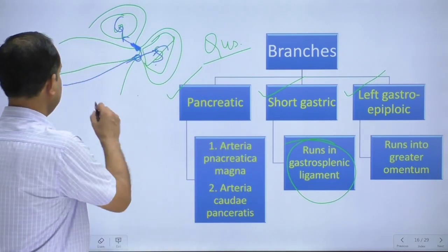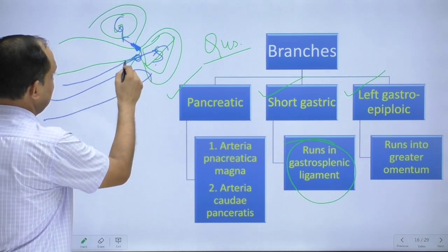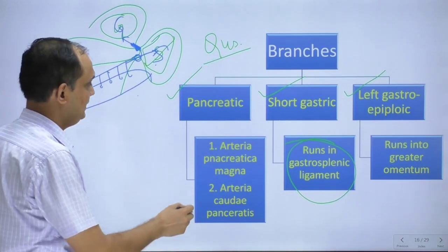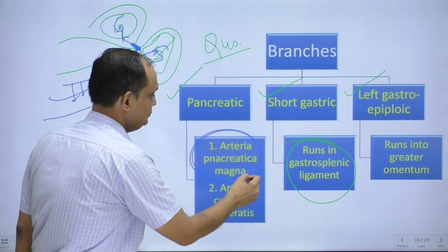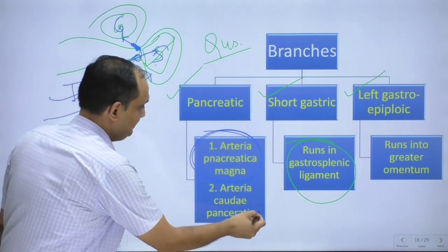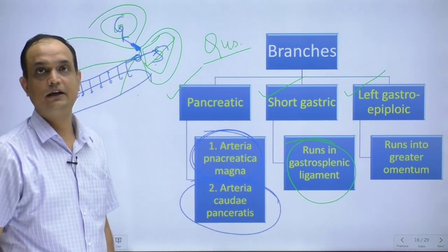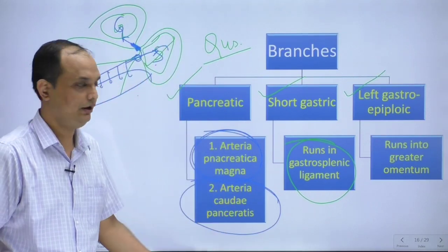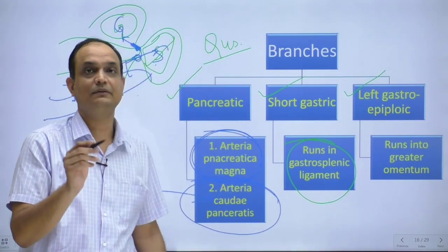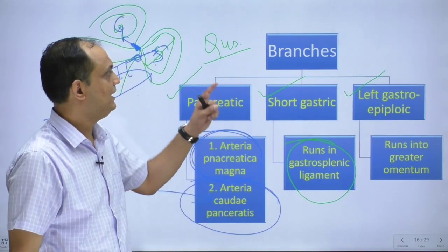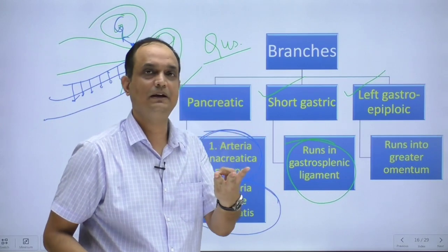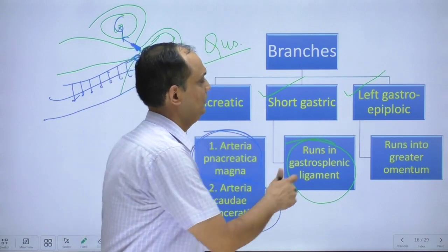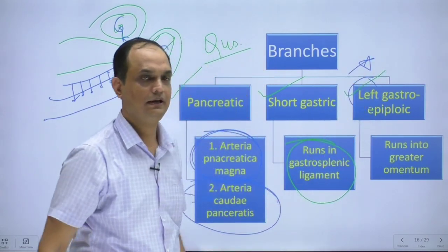The pancreatic branches from the splenic artery include two named arteries: arteria pancreatica magna, which supplies the body of the pancreas, and arteria caudae pancreatis, which supplies the tail of the pancreas ('cauda' meaning tail). So when studying the splenic artery, remember the three branches: pancreatic branches, short gastric artery, and left gastro-epiploic artery — keep in mind the word 'left.'